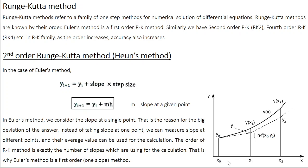The general equation is: the new value of y, yi+1, equals the old value yi plus slope times step size. Slope at a given point is called m and step size is h, so yi+1 = yi + m·h. In Euler's method we consider slope only at a single point, which causes considerable deviation from the exact solution. We can improve upon this by taking slopes at multiple points and averaging them. The order of the Runge-Kutta method refers to the number of slopes used for calculation.